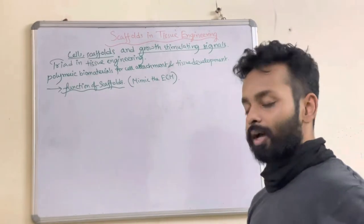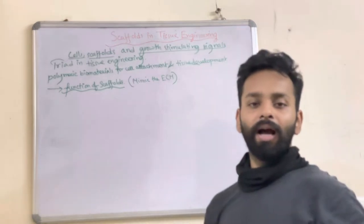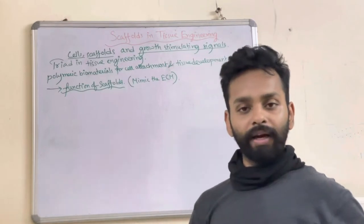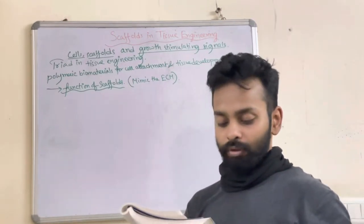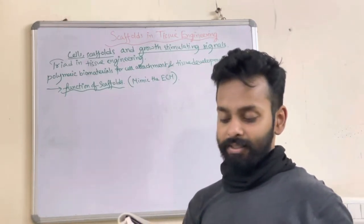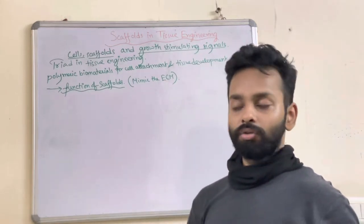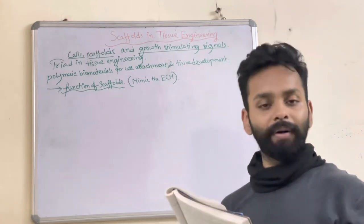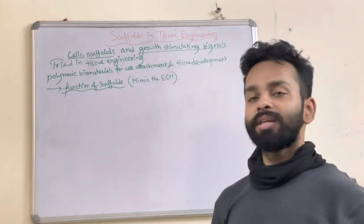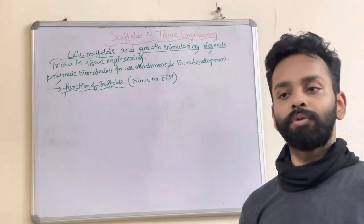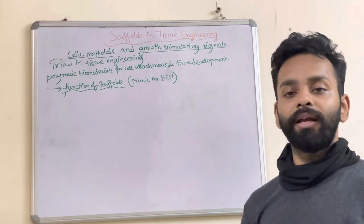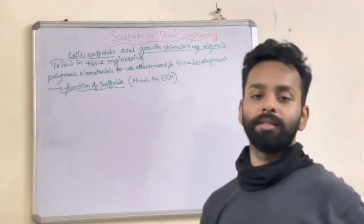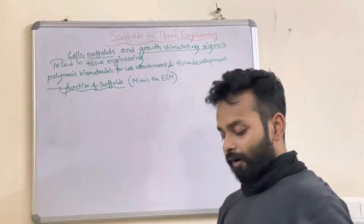What is a scaffold? A scaffold is basically a 3D material which is used to provide structural support for cells, attachment, and subsequent tissue development. A 3D material can be made up of polymeric biomaterials which can be used as a supporting framework to provide structural support to cells for cellular and tissue development and differentiation.